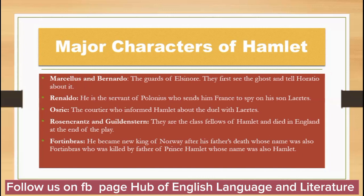Fortinbras became the new king of Norway after his father's death — whose name was also Fortinbras — who was killed by the father of Prince Hamlet, also named Hamlet. An important point to remember: just as Fortinbras's father and son share the same name, similarly the play's hero Hamlet and his father, the late King of Denmark, also share the name Hamlet.